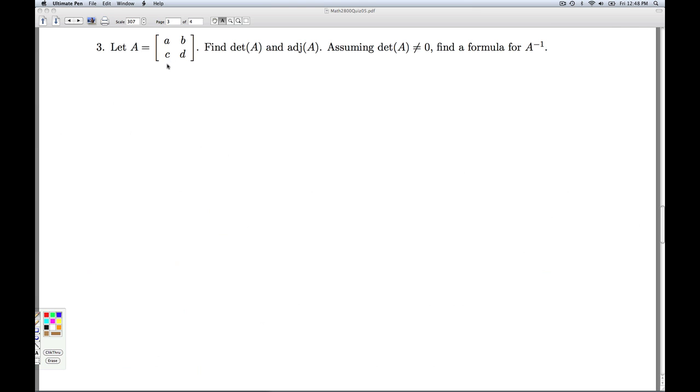All right, in part three we're given a generic two-by-two matrix A. We're asked to find the determinant of A and the adjoint of A, and assuming the determinant of A is not zero, find a formula for A inverse.